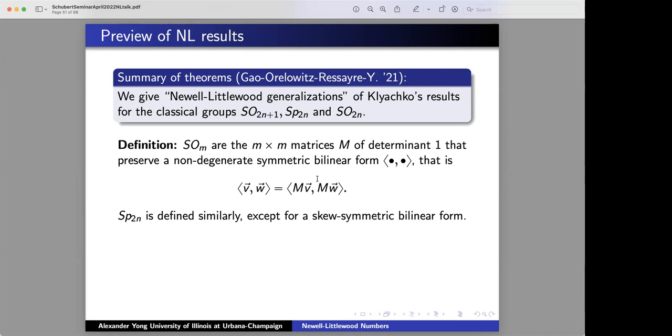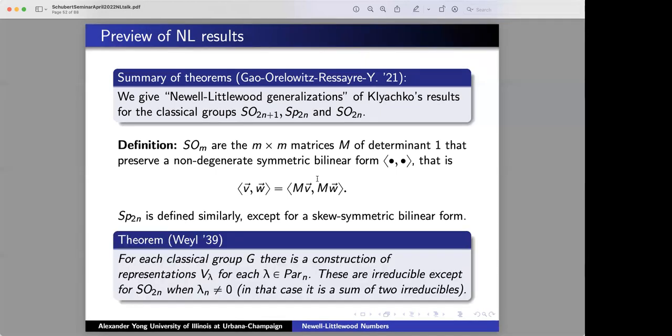For the classical groups, the thing to understand is that a lot of the representation theory looks very much like the case of GL_n. This is emphasized in Weyl's book, The Classical Groups, in 1939. He says that for every one of these classical groups, he's going to give you a construction or an algorithm to give you representations for every partition with at most n rows, just like Lascoux, just like in the first half. These are all irreducible except for one particular special case, which will be absolutely irrelevant to our conversation, as you shall see.